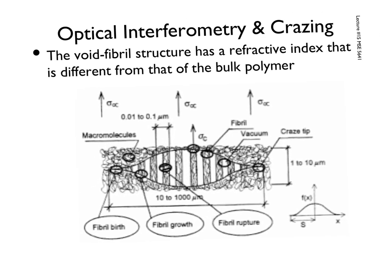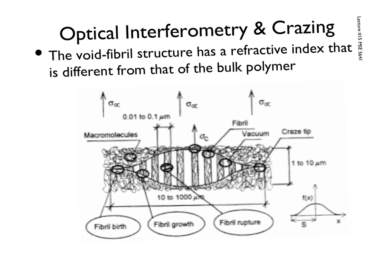To review, we're looking at this void-fibril structure that has a refractive index different from that of the bulk polymer, because we have these differences in matter. The polymer is not under no strain — it's now under a ton of strain, with a lot of alignment going on. So the light comes in, goes through the macromolecules, and starts bouncing off at different angles. At the same time, it's hitting these crazed areas of matter, causing changes in the wavelength and the overlap of the wavelengths of these beams of light.